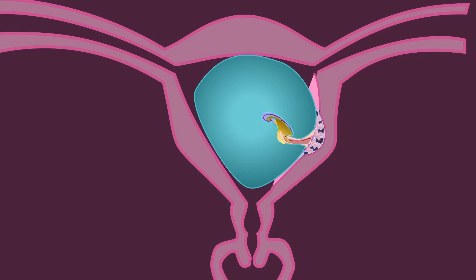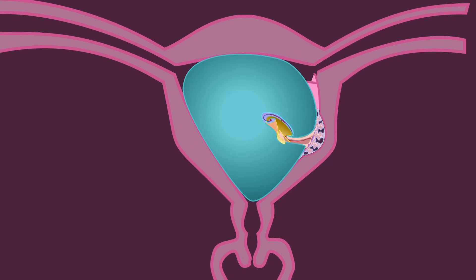The degeneration of the decidua capsularis happens somewhere between the fifth and sixth month of development. So initially the embryo grows within the decidua, but later it is growing within the uterine cavity — eventually obliterating it entirely. Thank you so much for watching this video. In the next lecture we will see the structure of the placenta in more detail, and also learn about the physiology and functioning of the placenta.